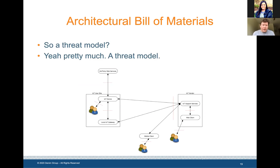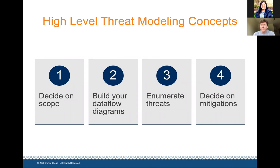When I was bouncing this idea off some folks, they came back with: well, it's a threat model. Yeah, pretty much — it's at least the first half of the threat model. You want to know all the different parts of the system and how they communicate with one another. A great way to do that is to build a data flow diagram. I personally like the DeMarco-style data flow diagrams — old school, pre-UML. At a high level: decide on the scope, build your data flow diagrams, and identify what are the external interactors, the processes running, the data stores, and how data flows between them, and where do you consider your trust boundaries to be. That gets you your architectural bill of materials.